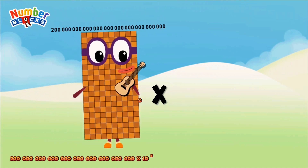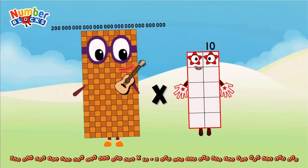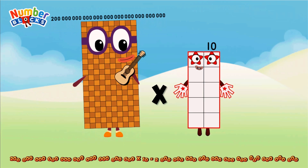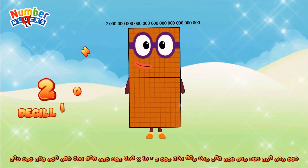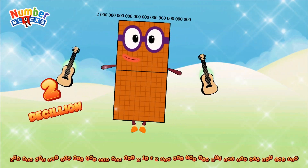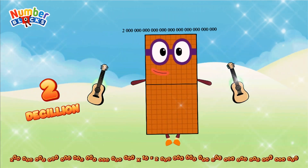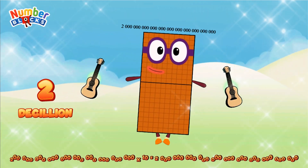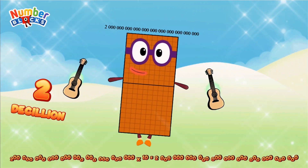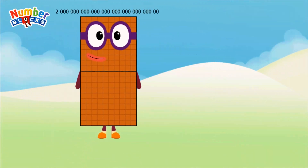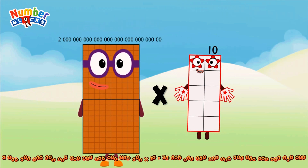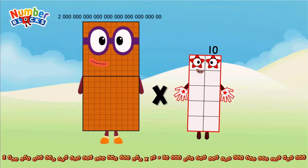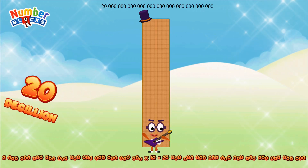Two hundred nonillion, multiplied by ten, equals two decillion. Two decillion, multiplied by ten, equals twenty decillion.